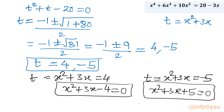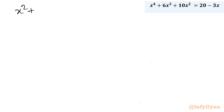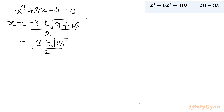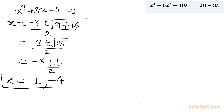For x² + 3x − 4 = 0, applying the quadratic formula: x = (−3 ± √(9 + 16)) / 2 = (−3 ± √25) / 2 = (−3 ± 5) / 2. Taking the plus sign: (−3+5)/2 = 2/2 = 1. Taking the minus sign: (−3−5)/2 = −8/2 = −4. So there are 2 real solutions clearly visible from the first quadratic.